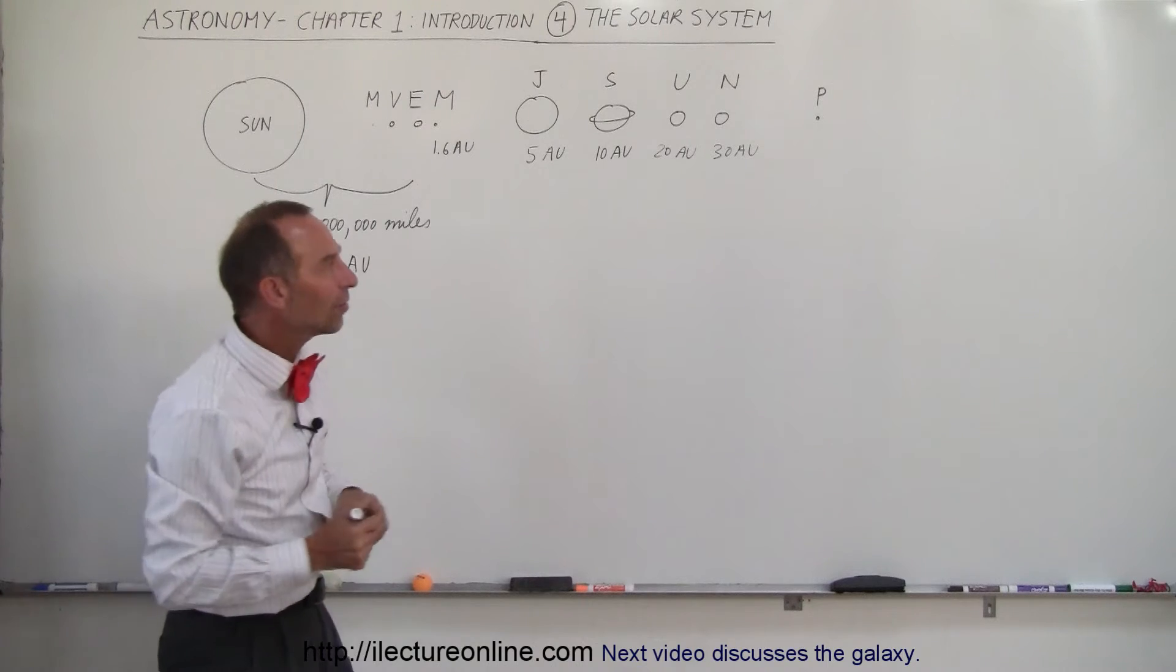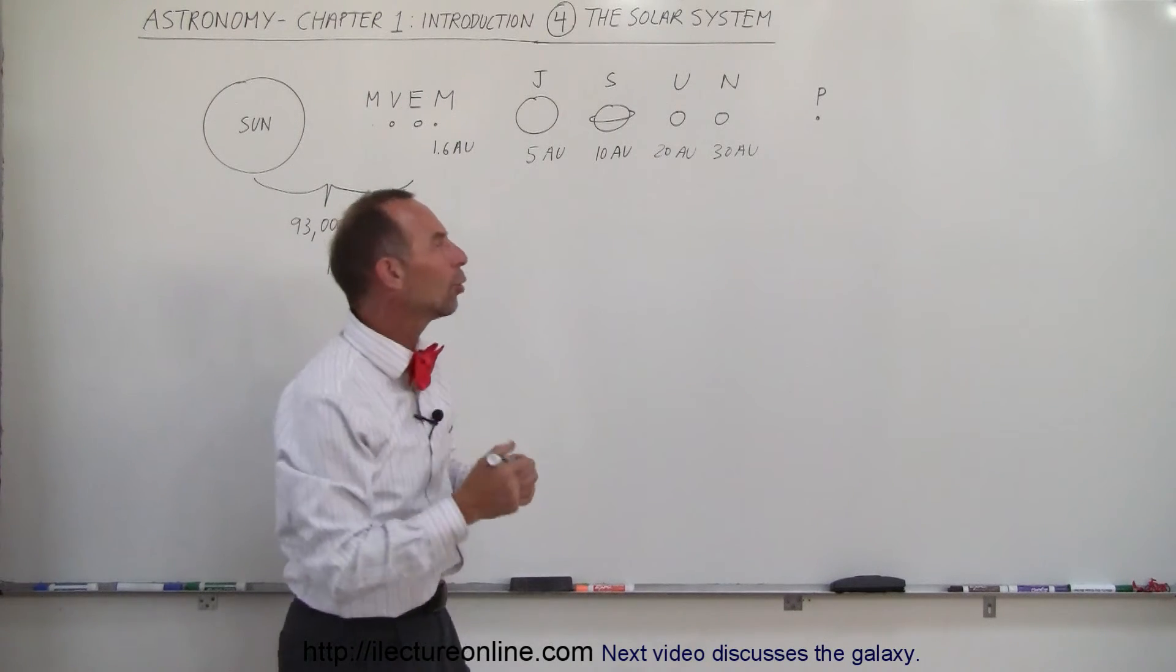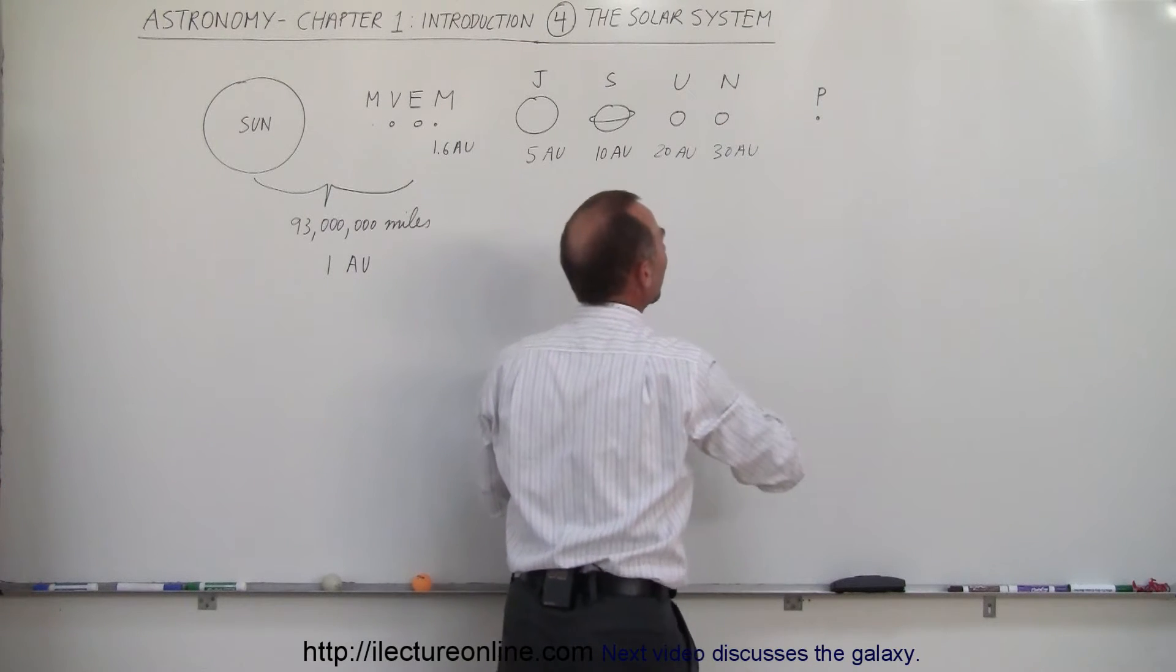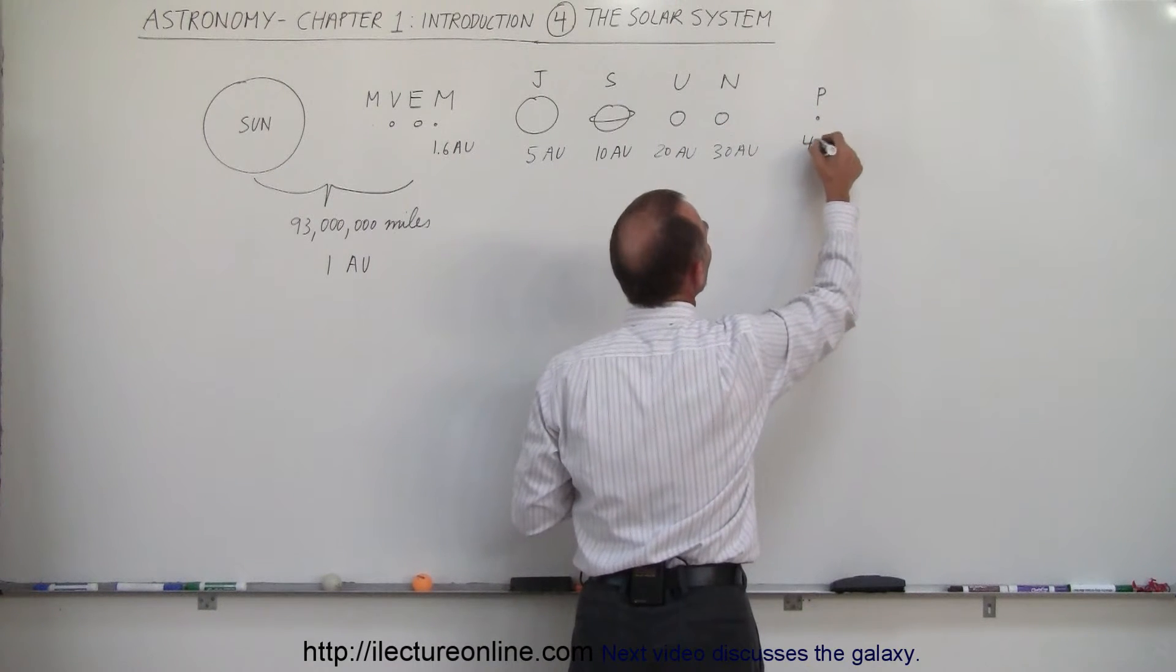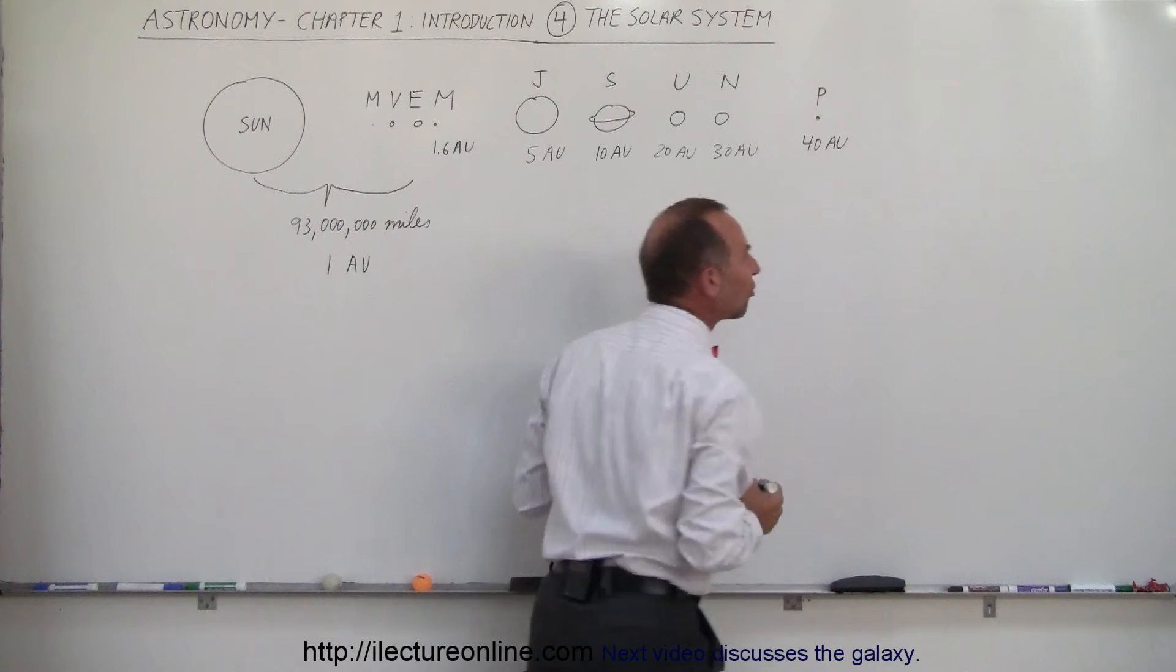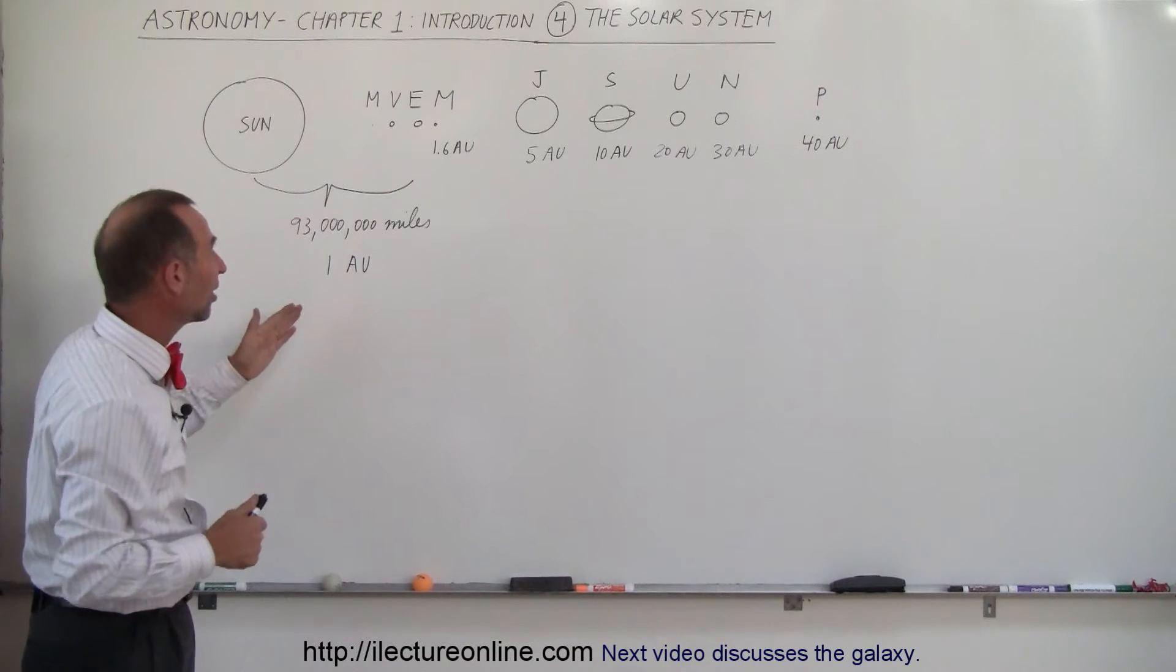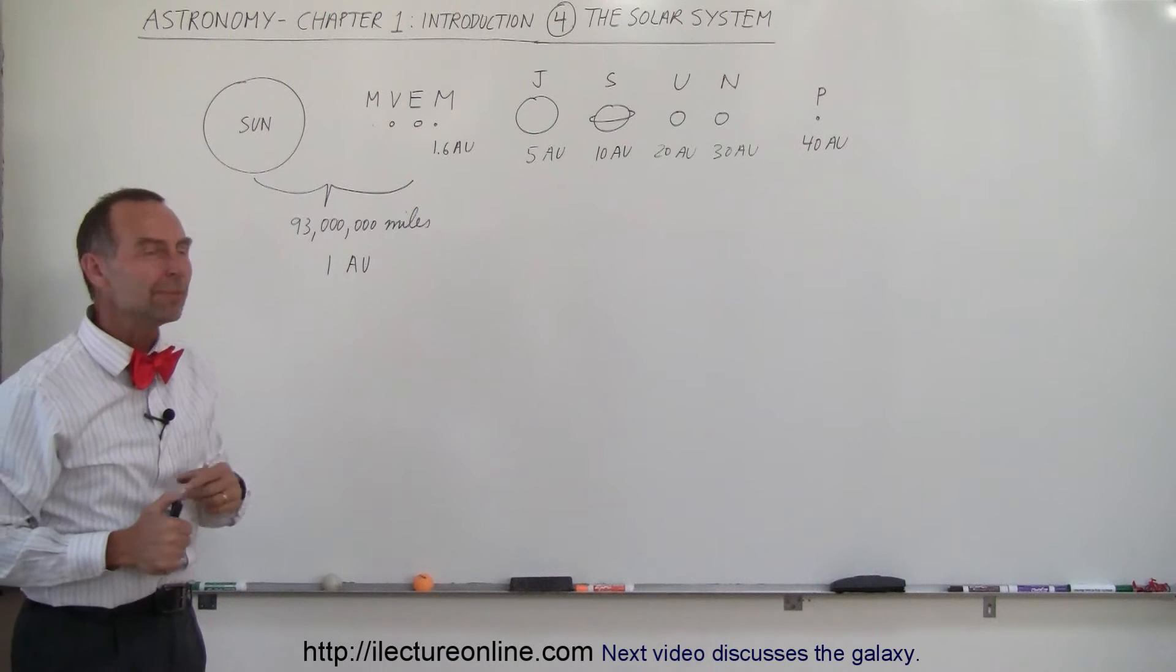And now we have Pluto way out there. Pluto has a very elliptical orbit. Sometimes it's as close to the Sun as Neptune. Sometimes it's much further away. But on average, Pluto is at a distance of about 40 astronomical units, 40 times the distance between the Earth and the Sun, almost 4 billion miles. Imagine.